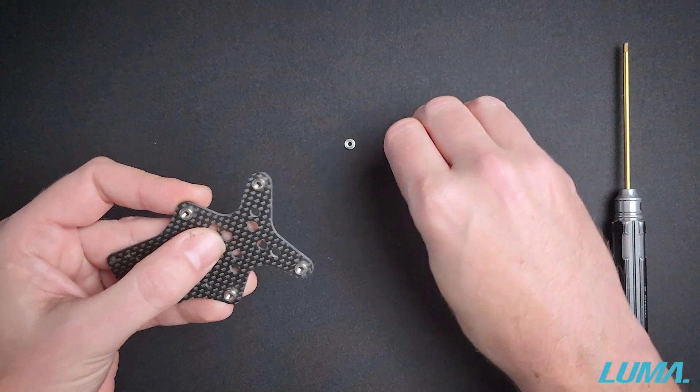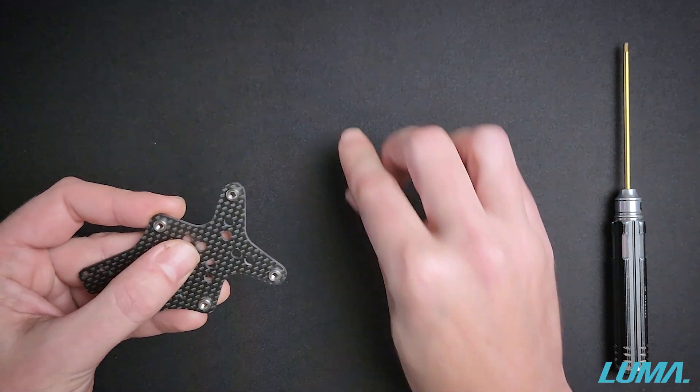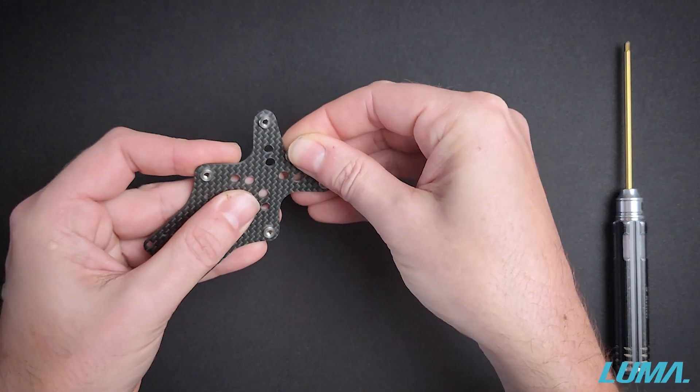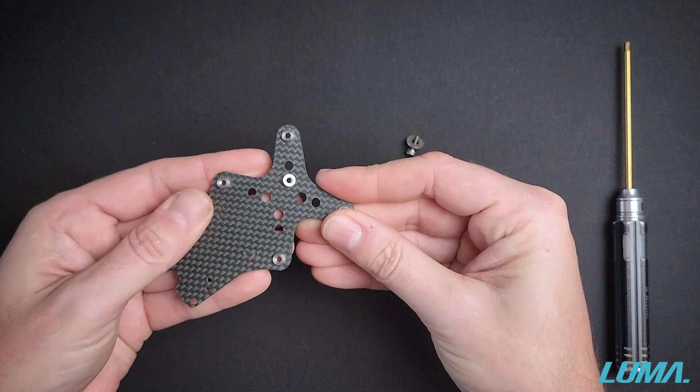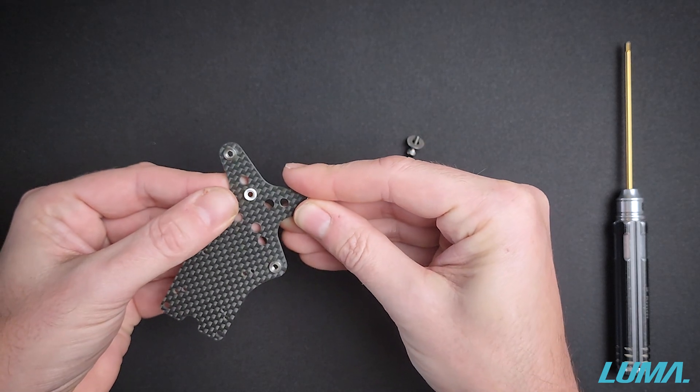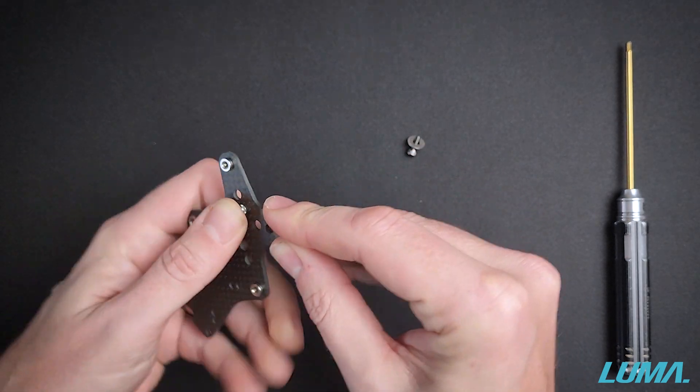So the bolt goes through the washer like so. You then grab your press nut. This is one of our Luma55 frames and you hover the press nut over the hole which you want to have it installed into.